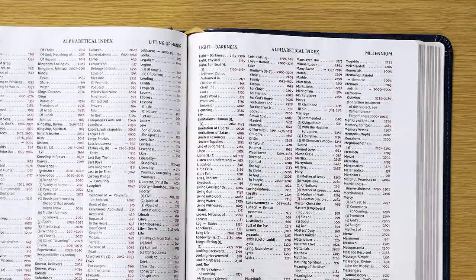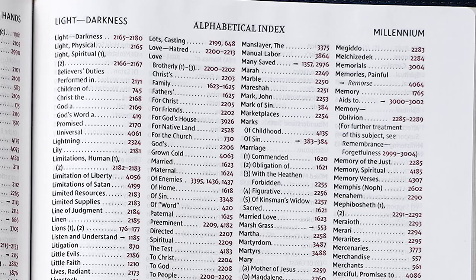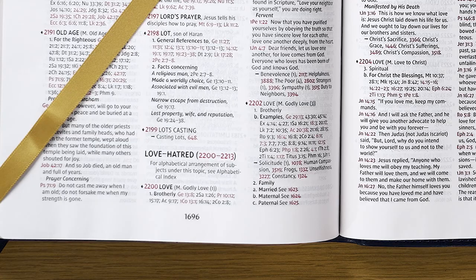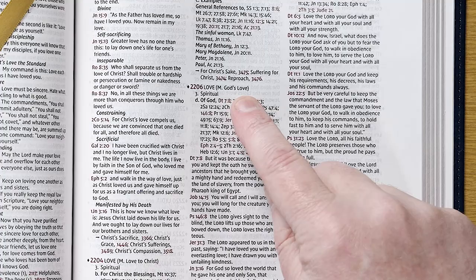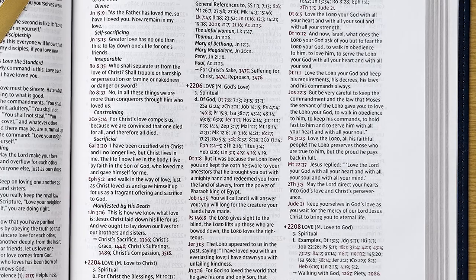If we turn to love in the alphabetical index, we'll see that it has 26 subtopics. We'll look at God's love, topic 2206. Next, turn to 2206 in the numerical index. We'll see that God's love is a subtopic of love-hatred, which covers topic numbers 2200 through 2213. We can use any of these subtopics for supporting points. Our topic, number 2206, includes 43 references with the 12 most prominent verses printed in full. The verse numbers for the most prominent verses are printed in red. All these verses can help a pastor or ministry leader prepare to speak on any topic. The preacher can even preach directly from this list if needed.